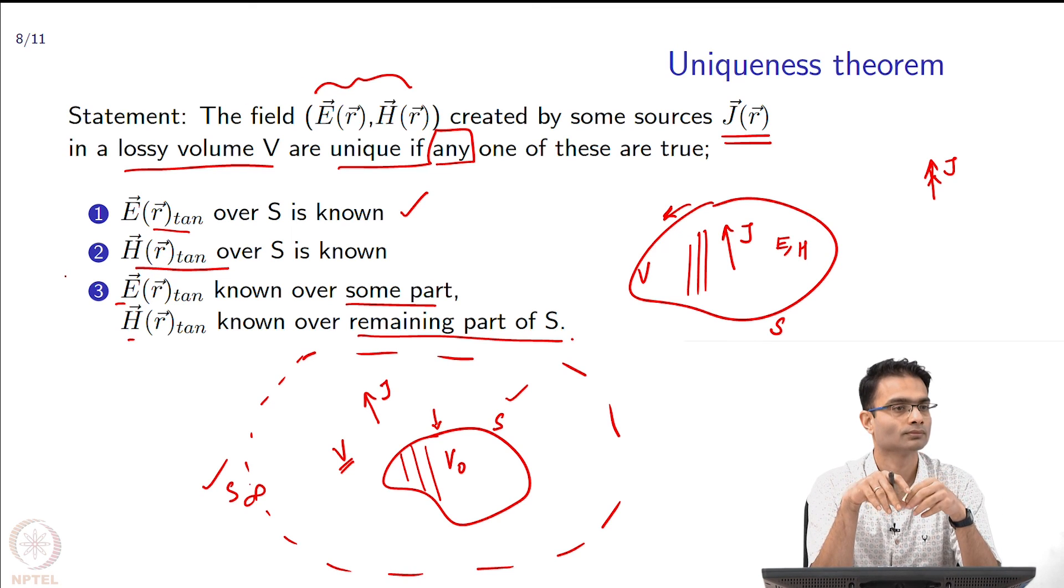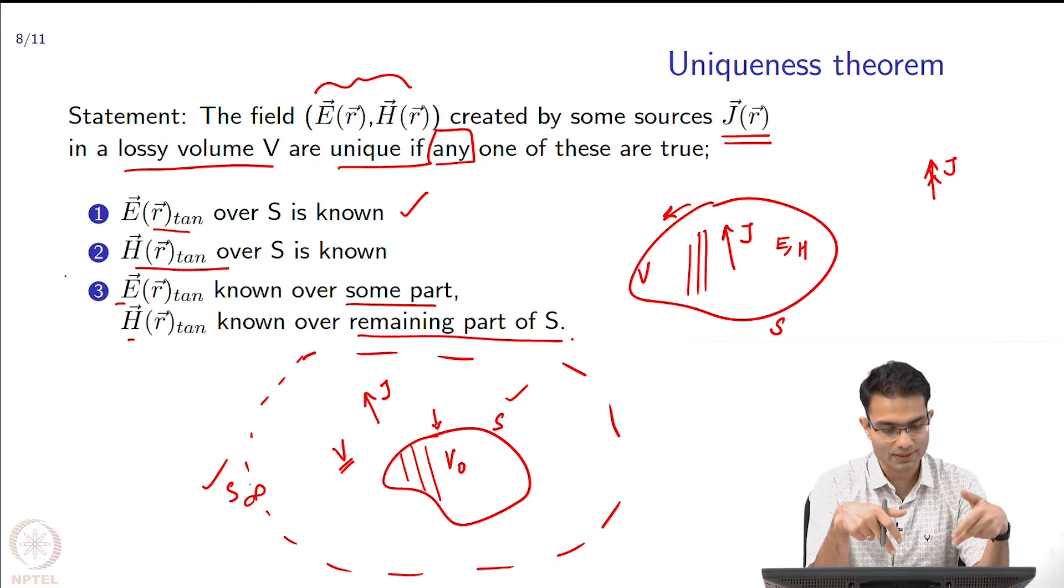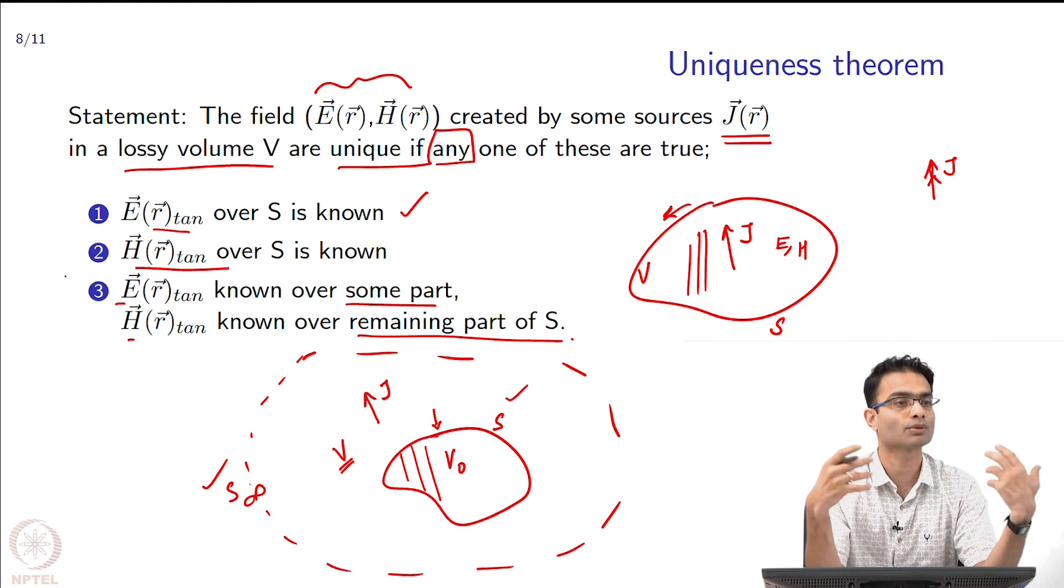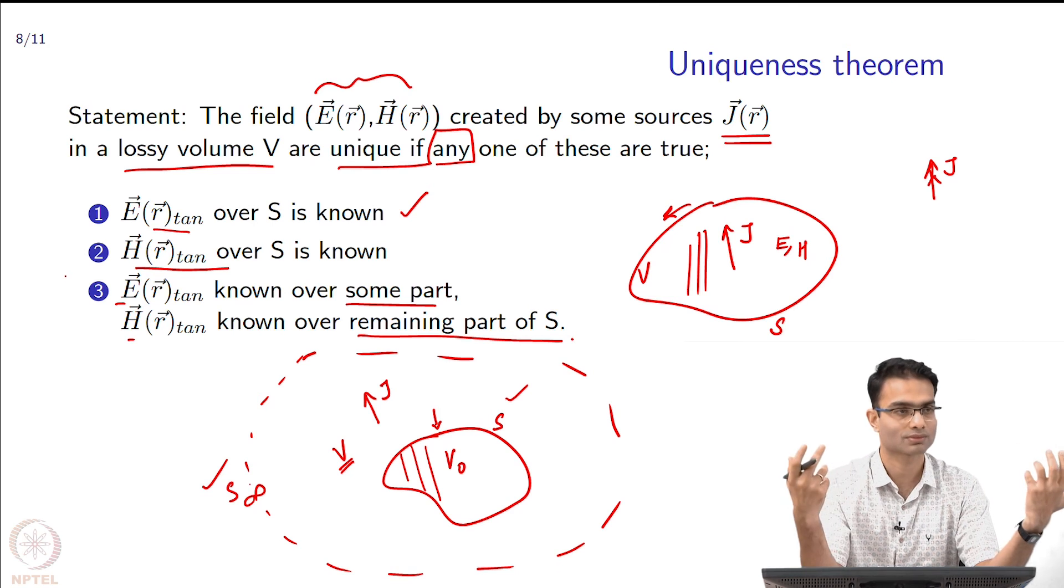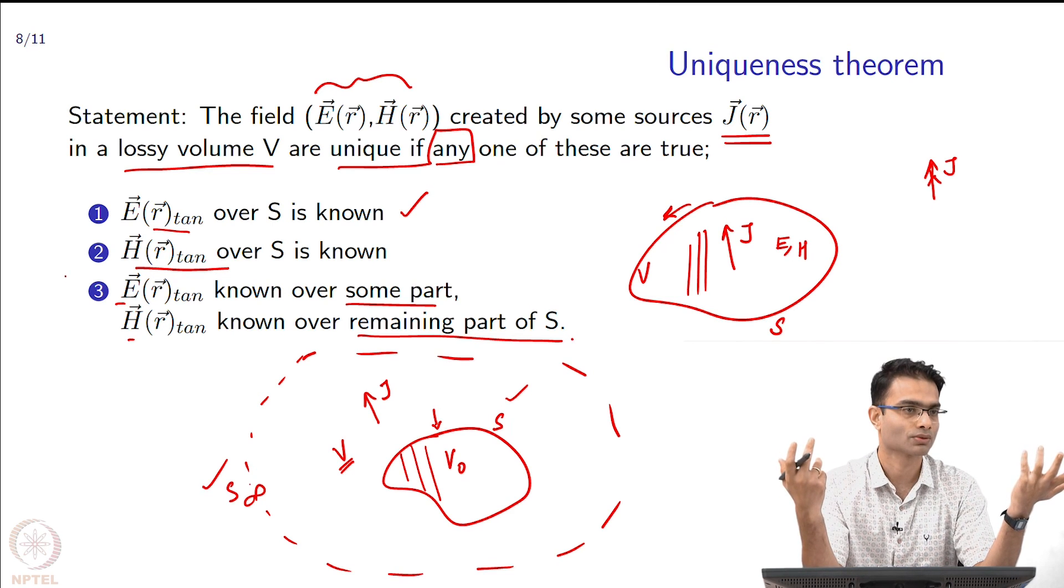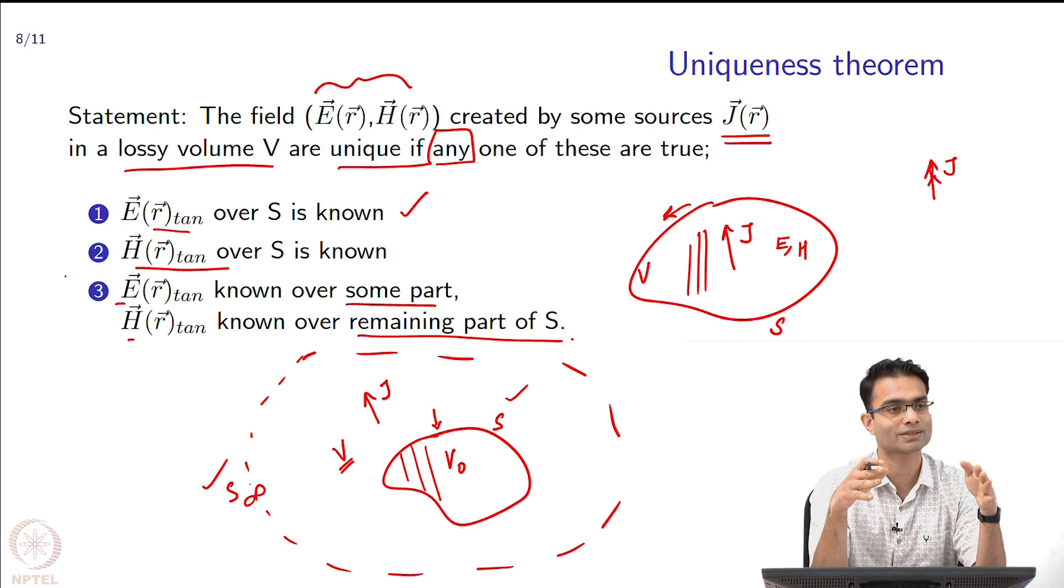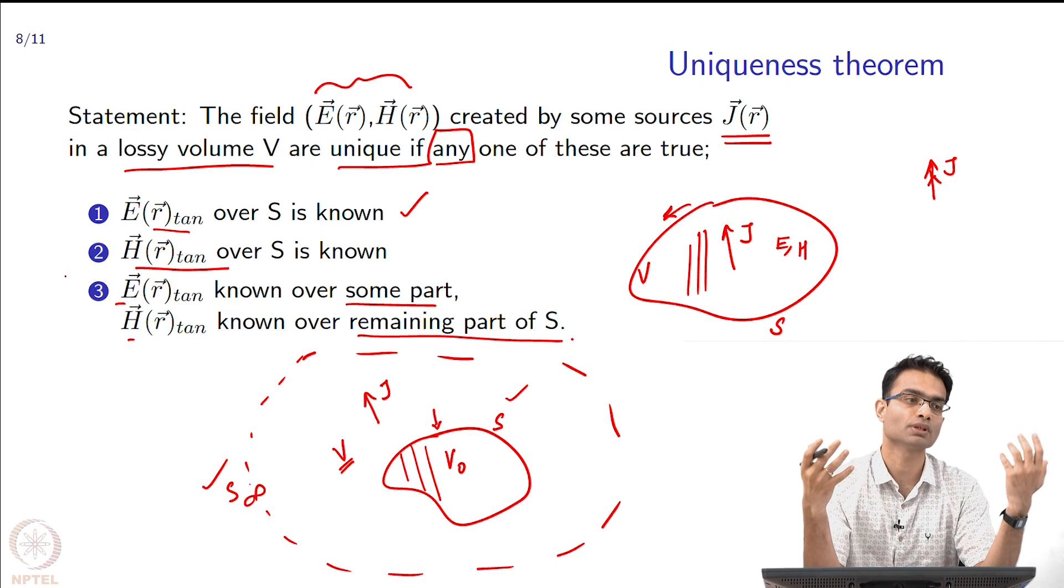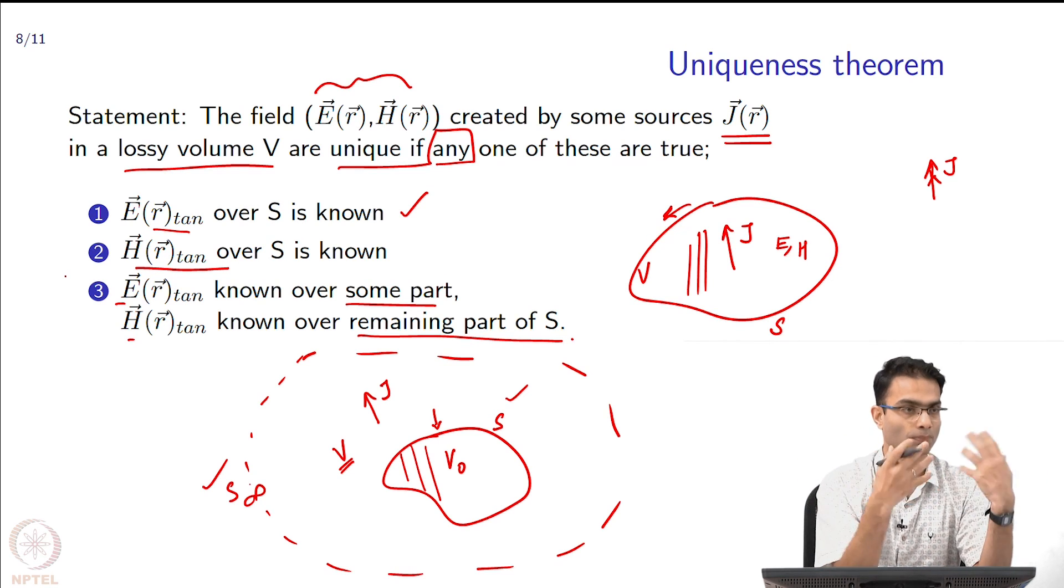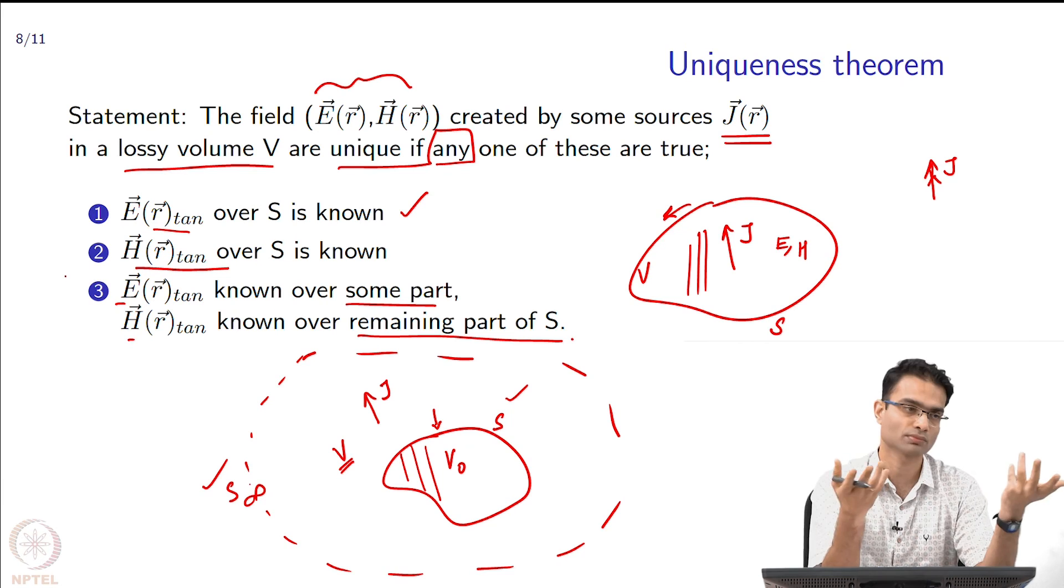Can we say when the field is not unique in that example? If these conditions are not satisfied then we cannot make any statement about the uniqueness of the fields, that is all. You may be able to construct examples where you have not specified E tan or H tan over the entire boundary. In that case you may get many solutions which satisfy the partial information which you have given, that is possible.